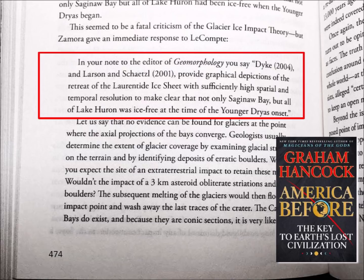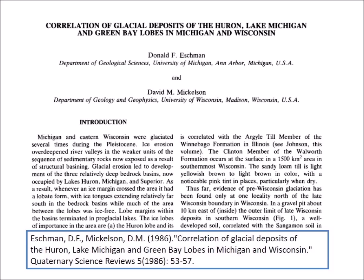One of Lecomte's objections was that there was no ice in Saginaw Bay. In his words, Dyke and Larsen & Schetzel provide graphical depictions of the retreat of the Laurentide Ice Sheet with sufficiently high spatial and temporal resolution to make clear that not only Saginaw Bay, but all of Lake Huron was ice-free at the time of the Younger Dryas onset. Graham Hancock was concerned that Lecomte's claim of no ice at Saginaw Bay was a fatal criticism of the Glacier Ice Impact Hypothesis, and he asked me if there was any supporting evidence.